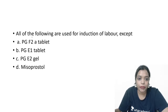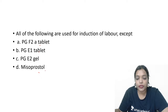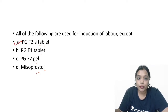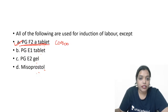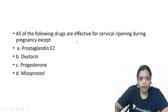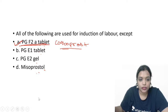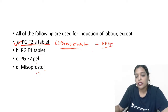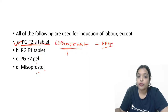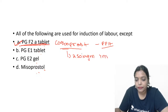All of the following are used for induction of labour except — PGF2 alpha, PGE1 tablet, PGE2 gel, and misoprostol. PGF2 alpha should never be used for induction of labour. It is carboprost. Carboprost is mainly used for PPH — it is the most potent drug for treatment of PPH. The dose of carboprost is 250 micrograms IM or intramyometrial.